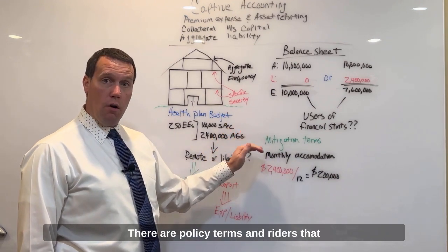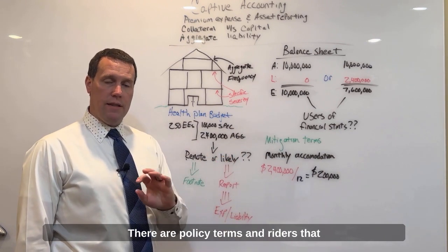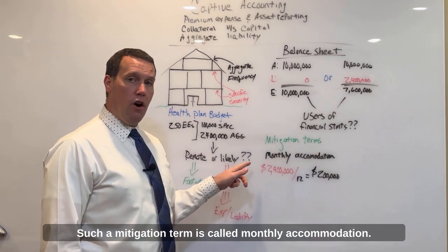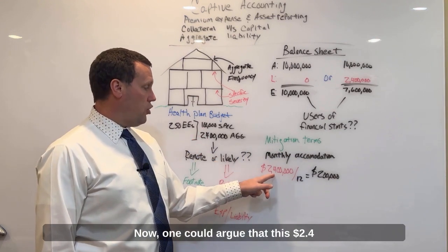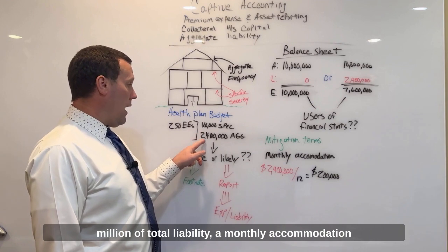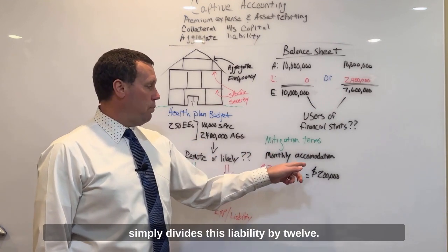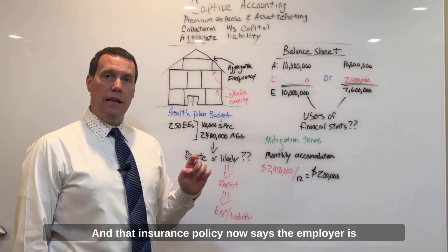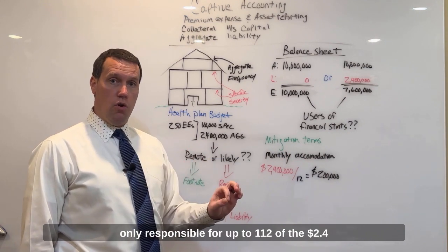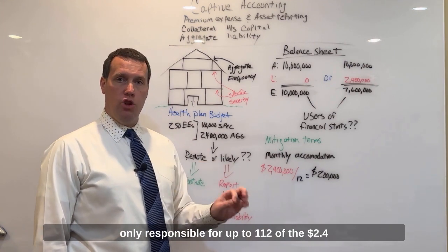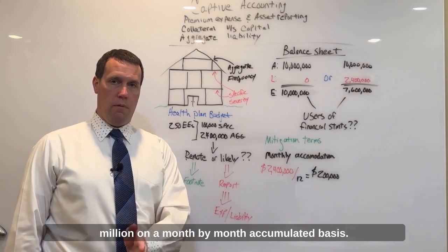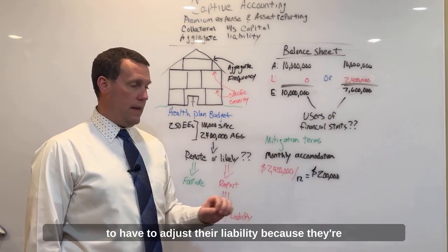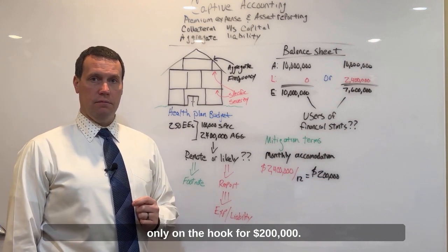How do you mitigate this? There are policy terms and riders that you should want to engage with. Such a mitigation term is called monthly accommodation. One could argue that this $2.4 million dollars of total liability — a monthly accommodation — simply divides this liability by 12. That insurance policy now says the employer is only responsible for up to one-twelfth of the $2.4 million dollars on a month-by-month accumulated basis, meaning every single month the employer is going to have to adjust their liability because they're only on the hook for $200,000.